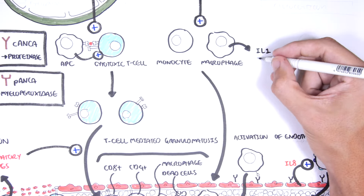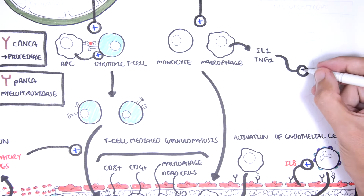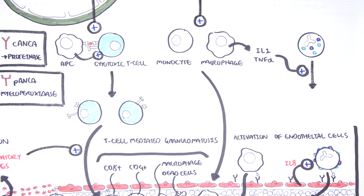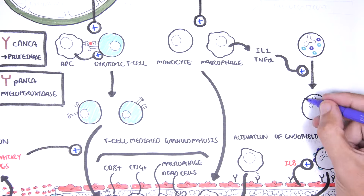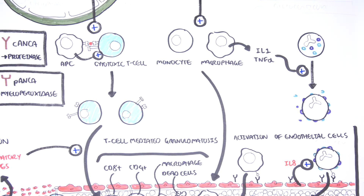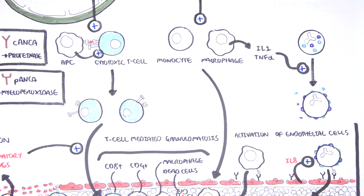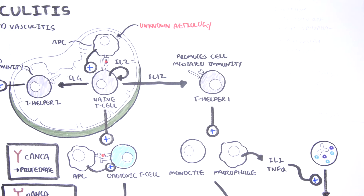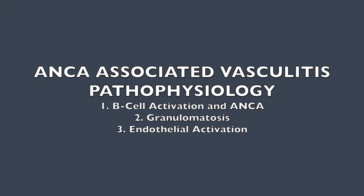The cycle continues: an acute flare-up causes activation of many immune cells, releasing pro-inflammatory cytokines such as interleukin-1 and TNF-alpha, which in turn cause activation of neutrophils and expression of the antigens myeloperoxidase and proteinase-3. In summary, ANCA-associated vasculitis pathophysiology involves an initial trigger — possibly an infection — followed by B cell activation and ANCA production, T cell-mediated granulomatosis, and activation of endothelial cells of the vessel, promoting vasculitis.